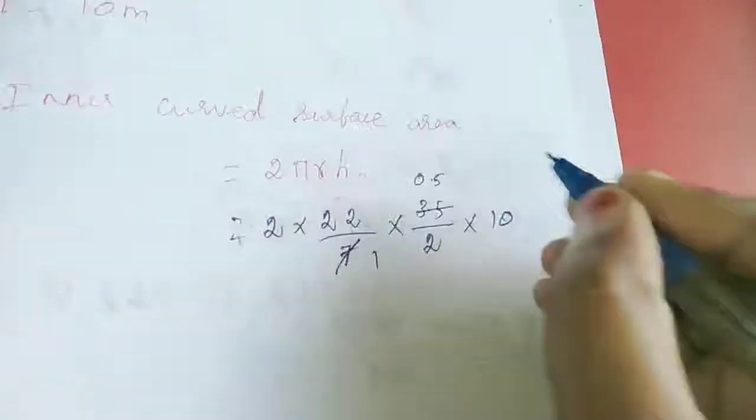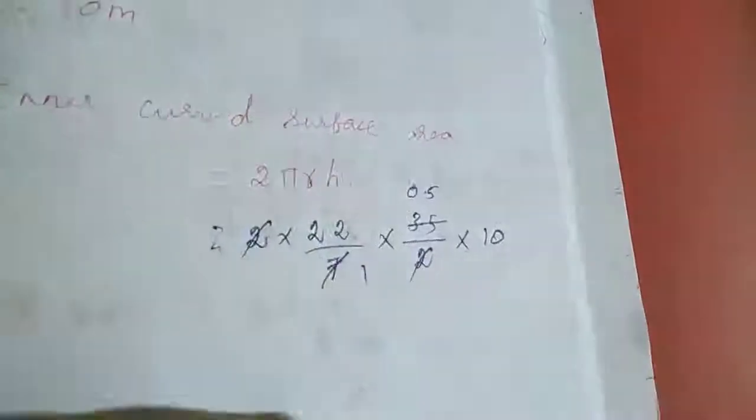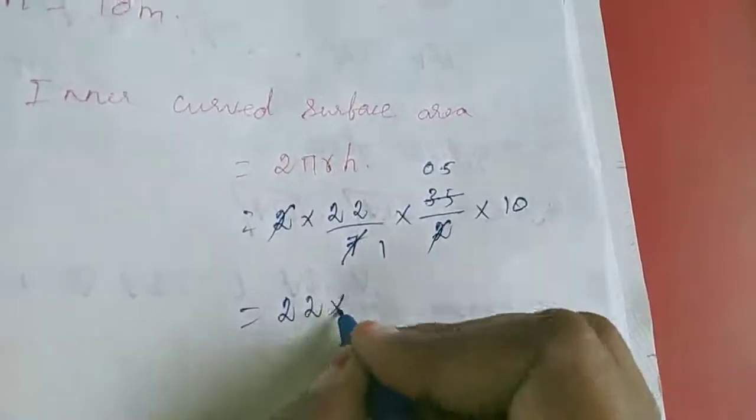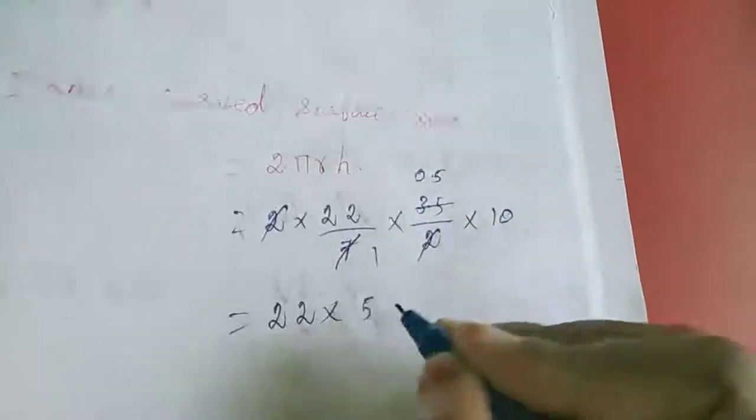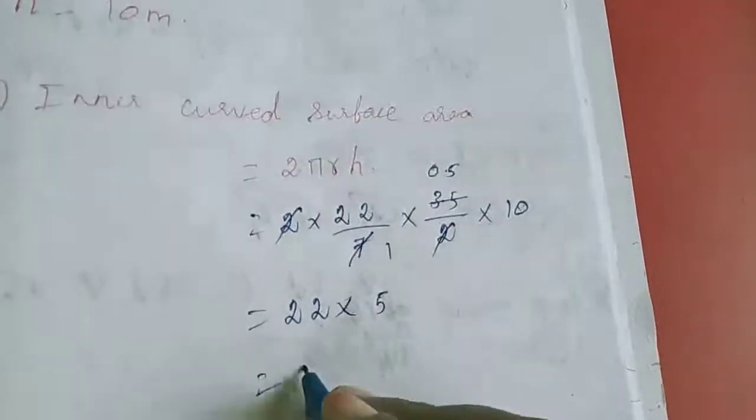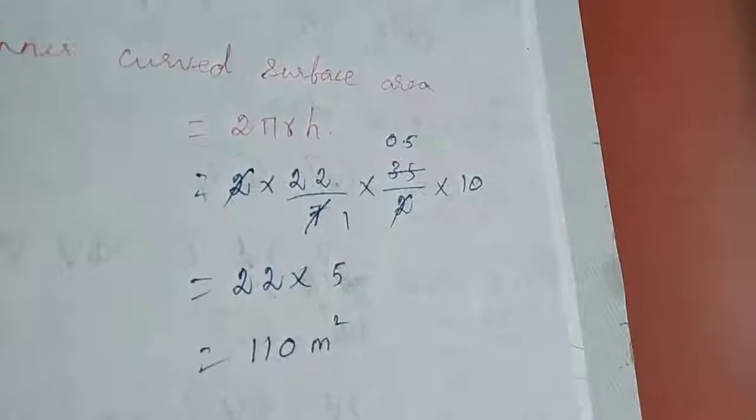7 is 7, 5 times 7 is 35. This is 22, 0.5 into 10 means 5. If we multiply, you will get 110 meter square.